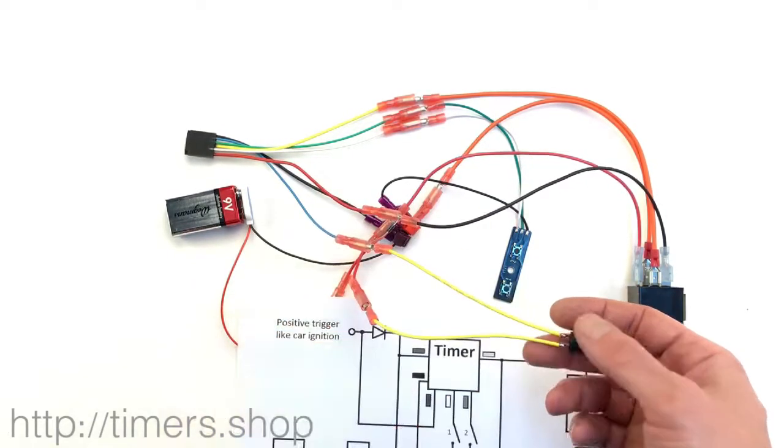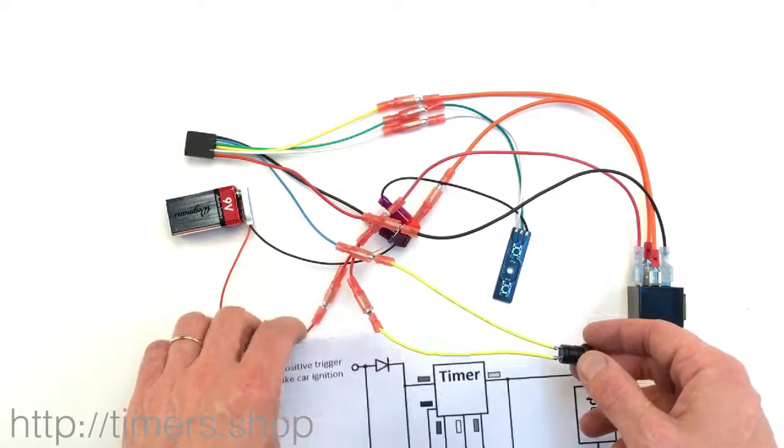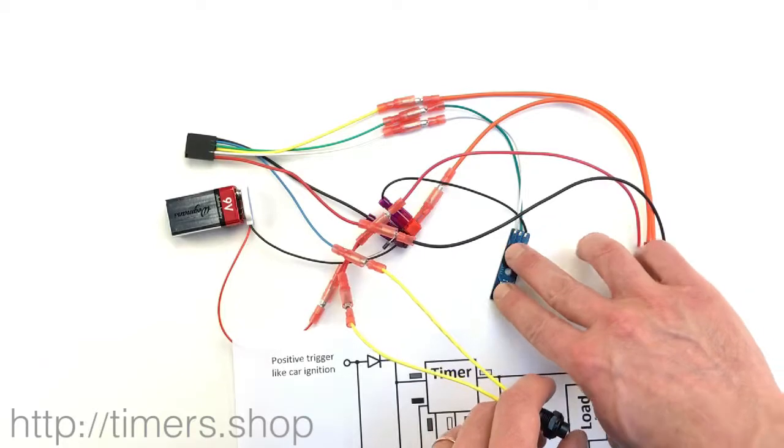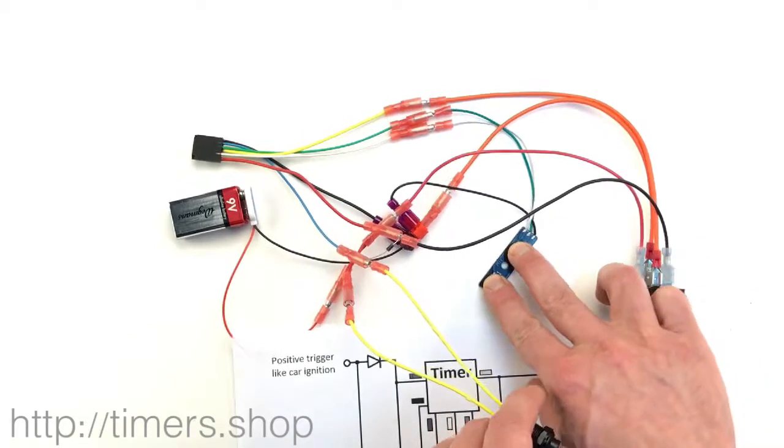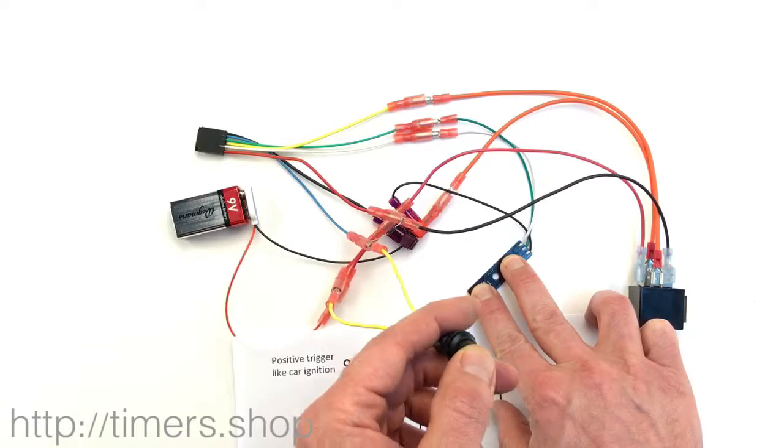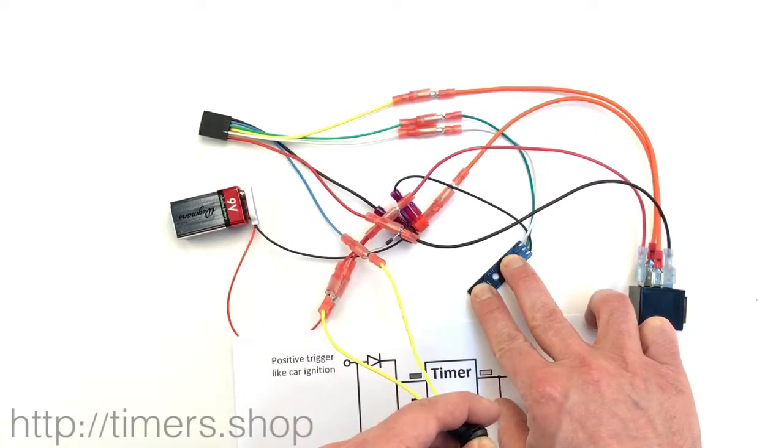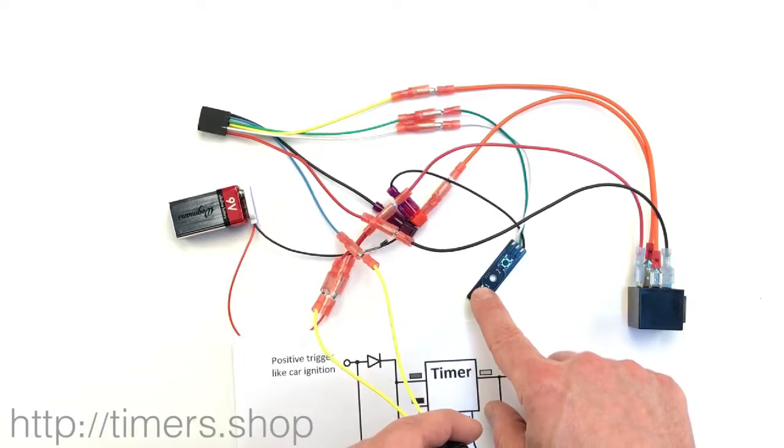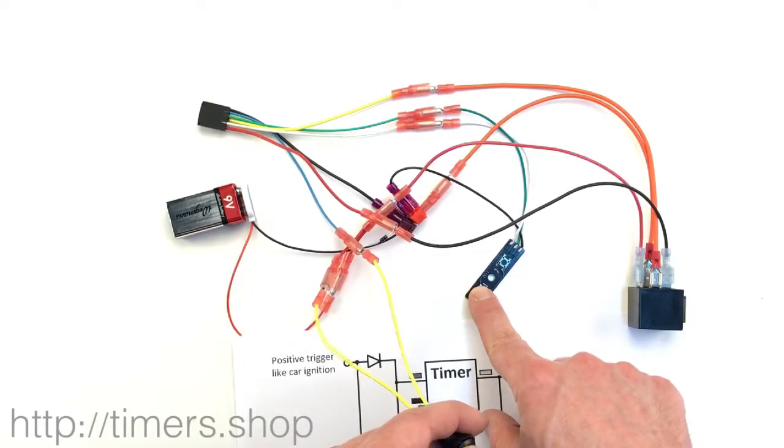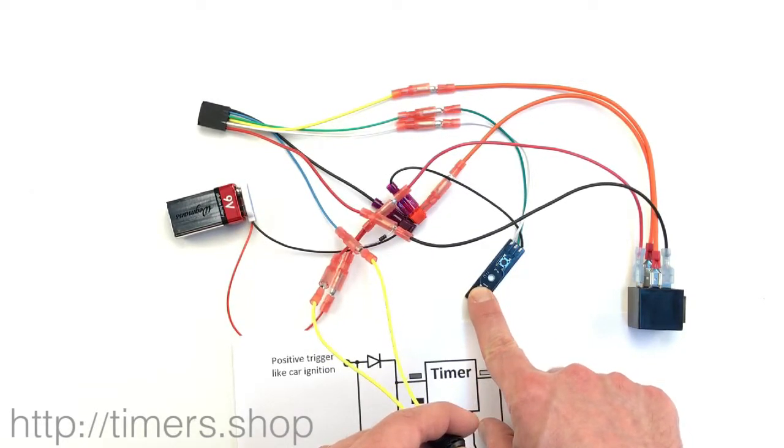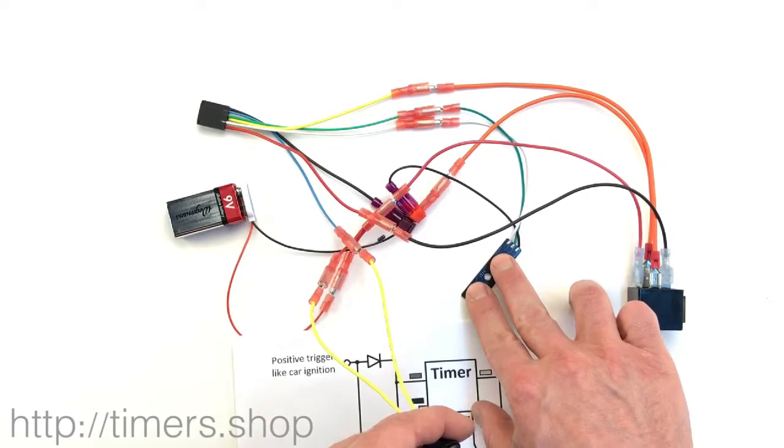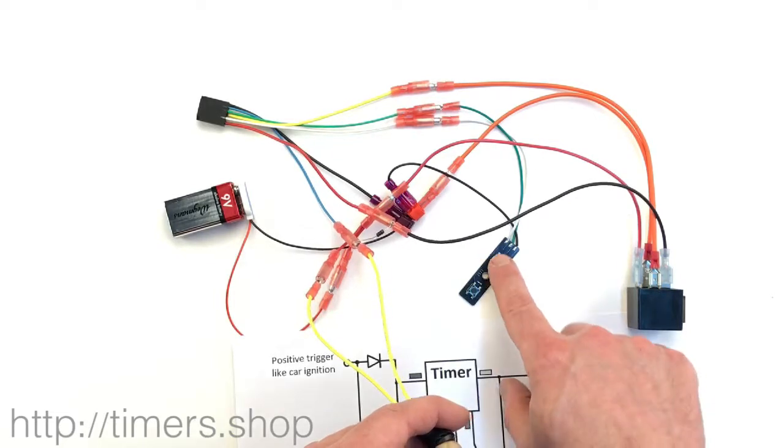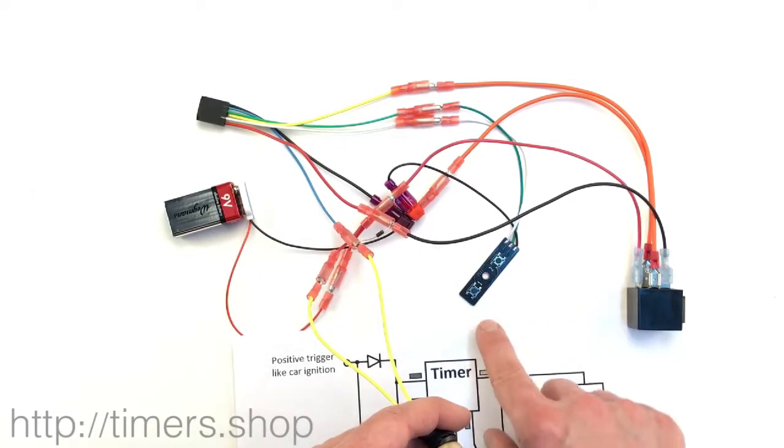I'm going to push two buttons to program the timer and push the ignition wire. The delay turns on. Let's say we set the delay time to five seconds. Release, push two buttons.